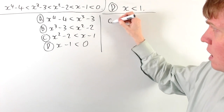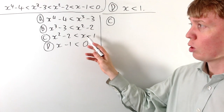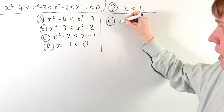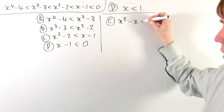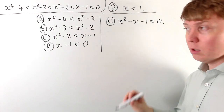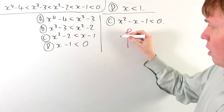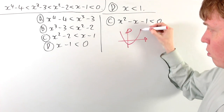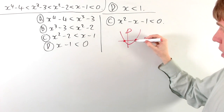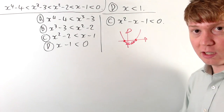Moving on to C, we can rearrange this into a quadratic inequality. Taking away x and adding 1 on both sides, we get x squared minus x minus 1 is less than 0. We can look at this graphically as a quadratic with two roots, and we're looking for where this quadratic is less than 0, which will be between the two roots.